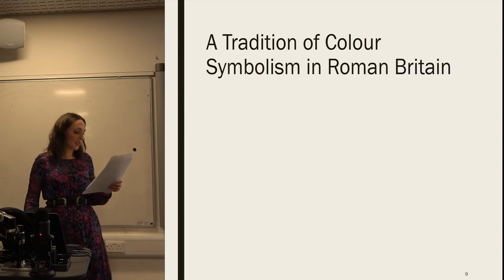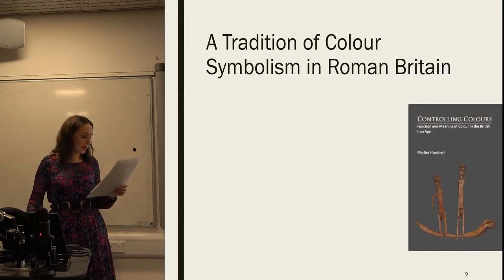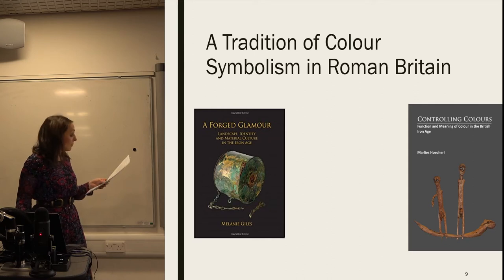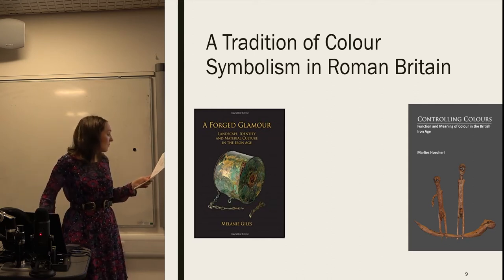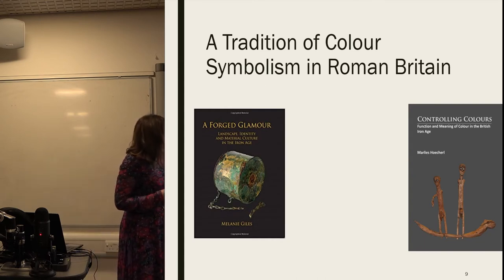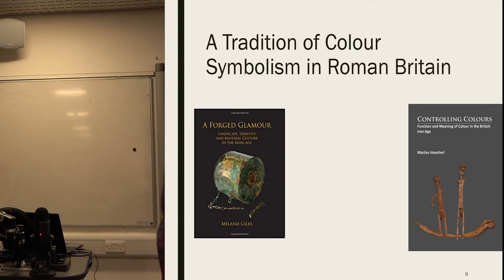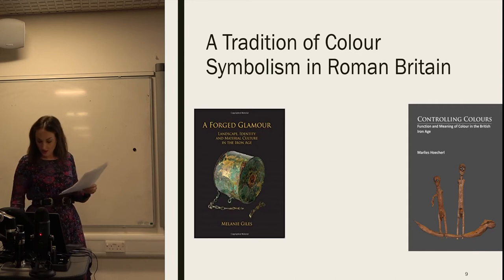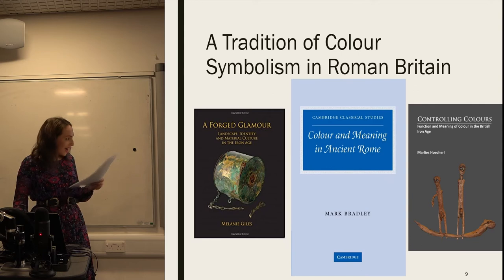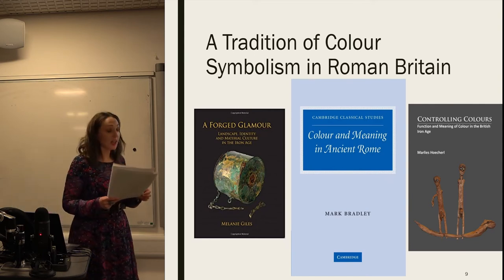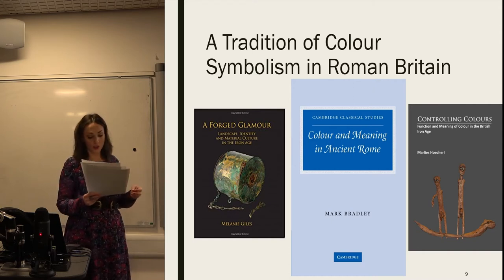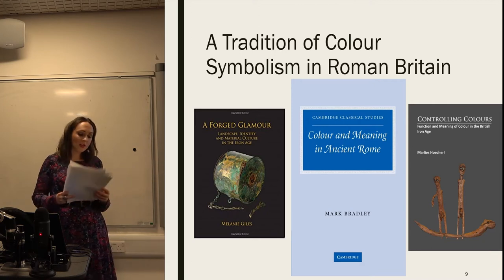That colour could be a gateway into understanding ritual action is not a new concept, and the symbolic connotations of colour, particularly in mortuary rituals from ancient British societies, are quite revealing. This is Melanie Giles' 'Forged Glamour', which looks at colour, particularly enamelling in metalworking, and a recent comprehensive study by Hocul of colour symbolism in Iron Age material culture. In the Roman world, there's also Mark Bradley's 2011 'Colour and Meaning in Ancient Rome', where he explores how colour language was used, particularly by politicians and orators, to organise, classify and evaluate their world.